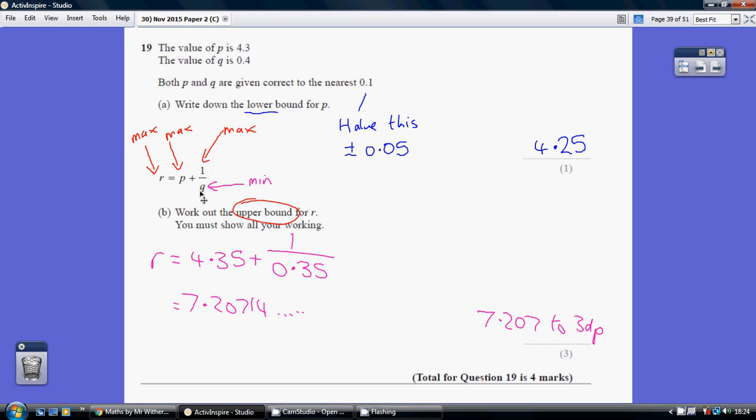To make 1 over Q as a whole as big as possible, Q's got to be as small as possible. So we're trying to maximise P, minimise Q. So R equals the biggest value of P,